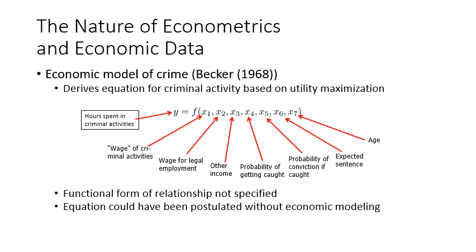X1 is the wage of criminal activities — how much a person could receive from doing criminal activities. It is expected to have a positive relationship with Y. X2 is the wage for legal employment — how much a person earns from working in legal activities. It is expected to have a negative relationship with time spent in criminal activities.